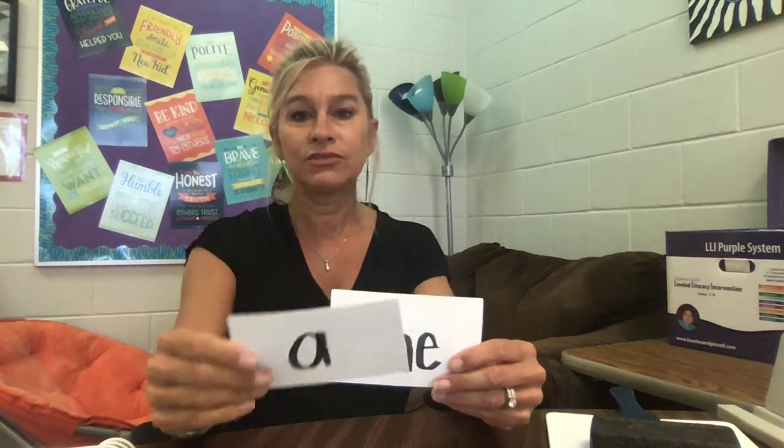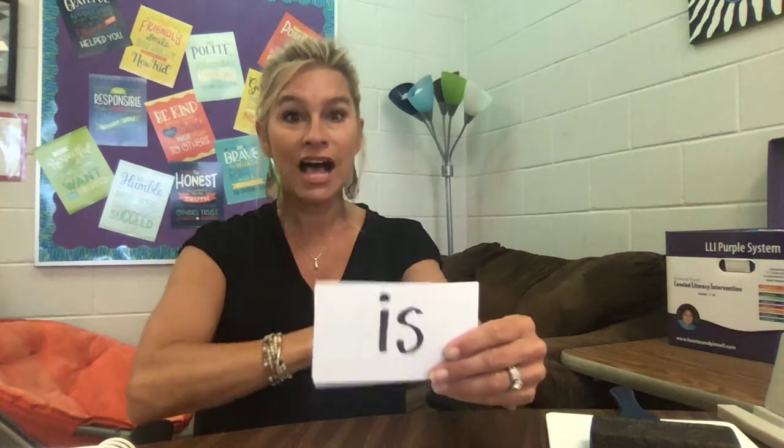The next one — you know this one too. When it's short it says 'ah,' but when it's in the middle of a CVC (consonant-vowel-consonant) word it's going to be short. When it's a sight word, it's going to say its name: 'a.' So ready — load it: 'a,' tap it: 'a,' sweep it: 'a.' Very good!